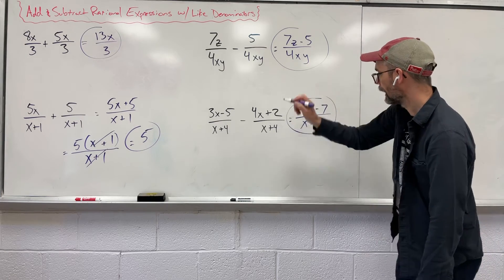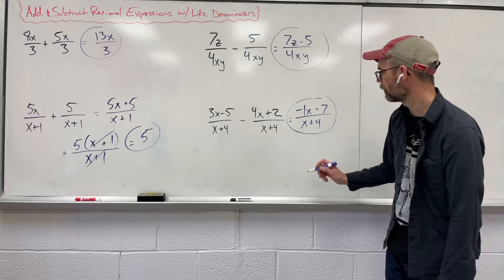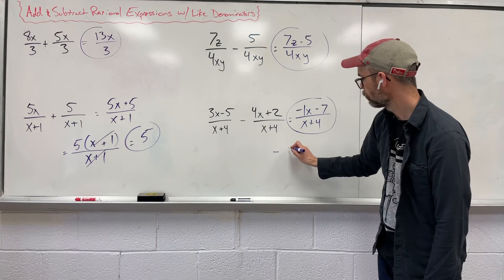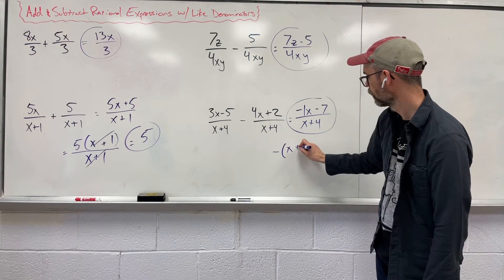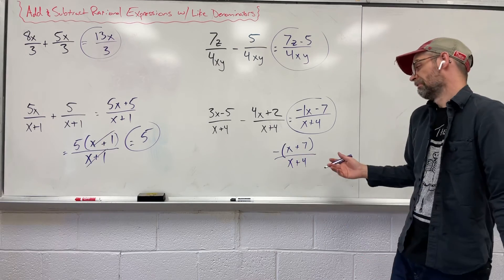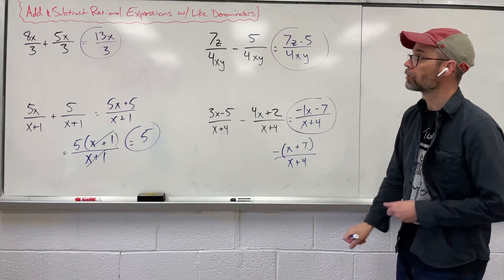We could leave it there. Or can you factor anything else out? Well, let's see. You can kind of, they both share negative up top. You could pull a negative out and get negative x plus 7 all over x plus 4. You might see an answer that looks something like that, but this is okay.